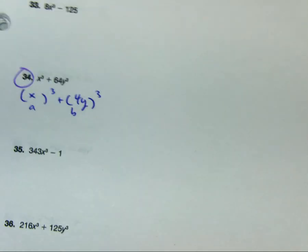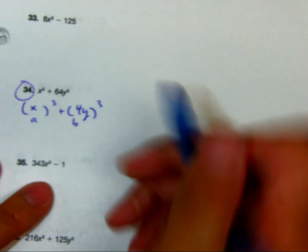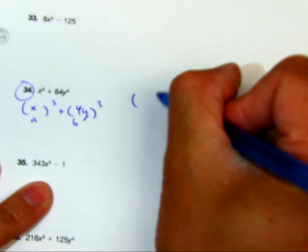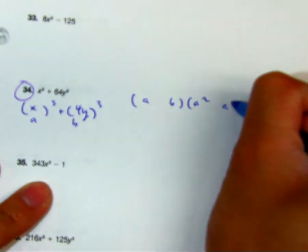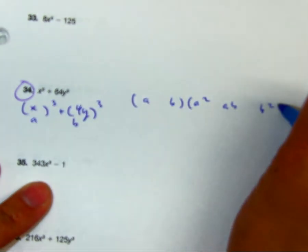So now I use my formula: AB, A squared, AB, B squared.